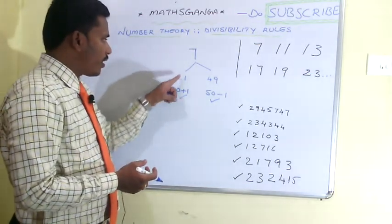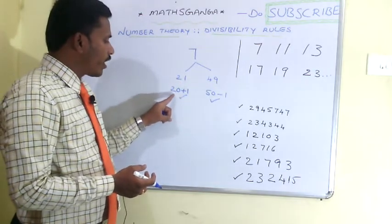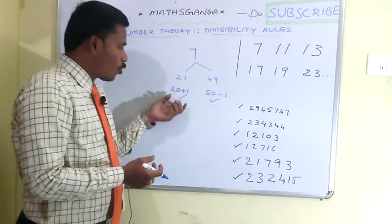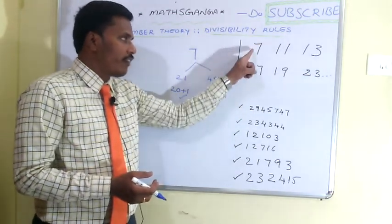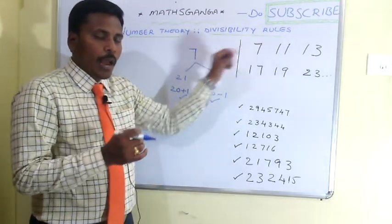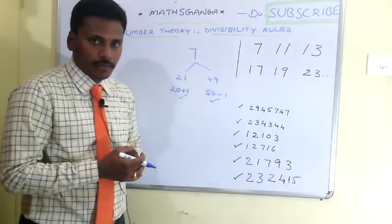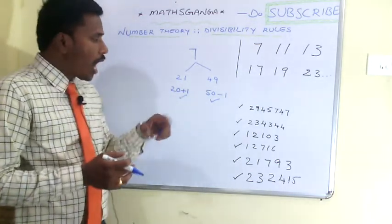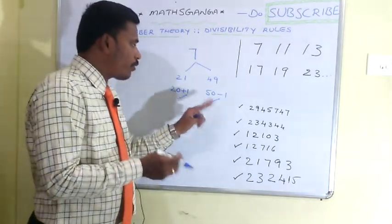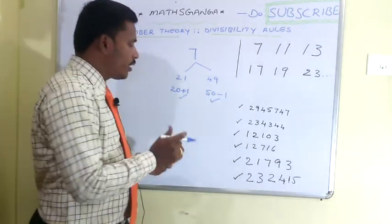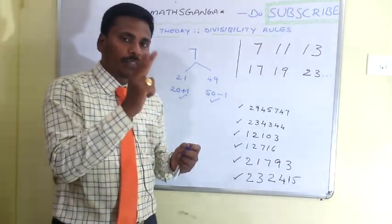Since 21 is a multiple of 7, and we can express 21 as 20 plus 1, coming to the divisibility rule for 7: one way is multiplying the last digit with 2 and subtracting. The other way is multiplying the last digit with 5 and then adding. We are mentioning two divisibility rules for 7.